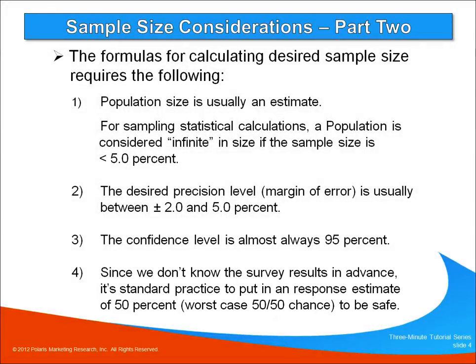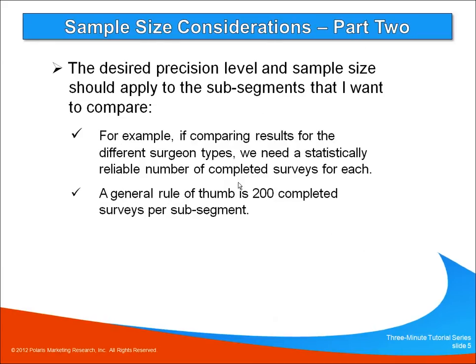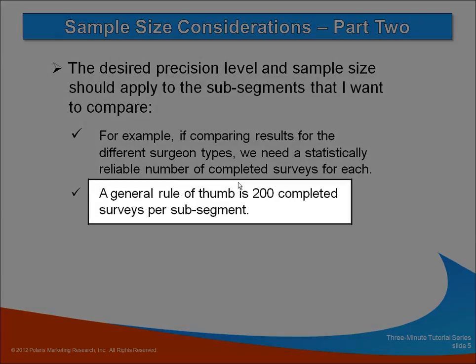While this may seem a bit overwhelming, the actual execution is quite easy. If my research requires that I compare the results between subsamples, it's important that I have the right number of completed surveys for each to be statistically reliable. A good rule of thumb is to have 150 to 200 completes for each segment of interest.